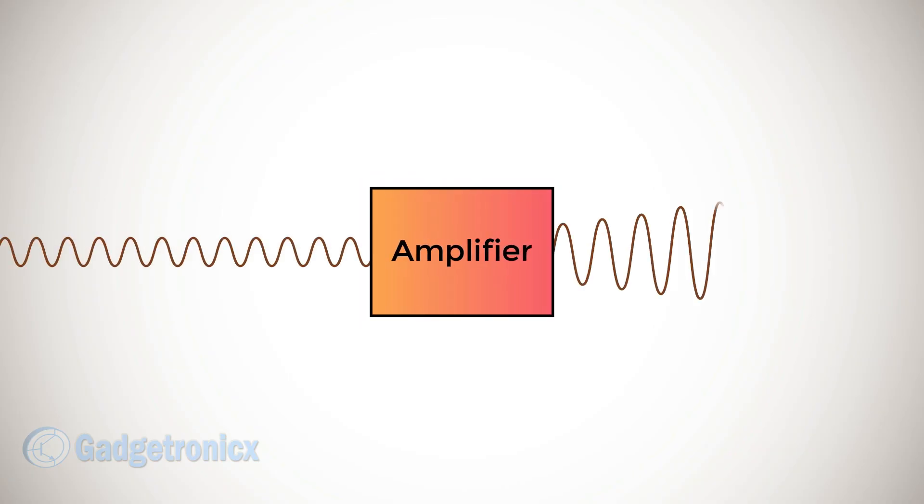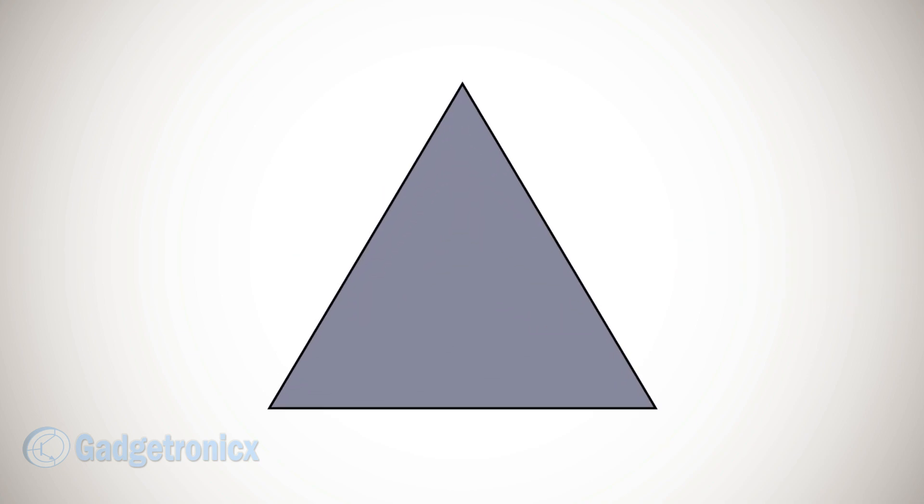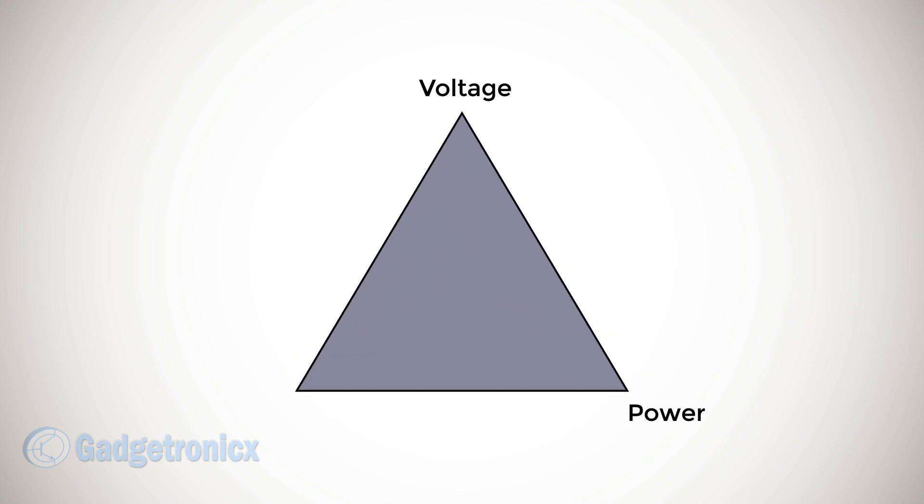Amplifier is an electronic device or circuit that is used to increase the voltage, current, or power of an input signal. The process of increasing these parameters in a signal is called amplification.